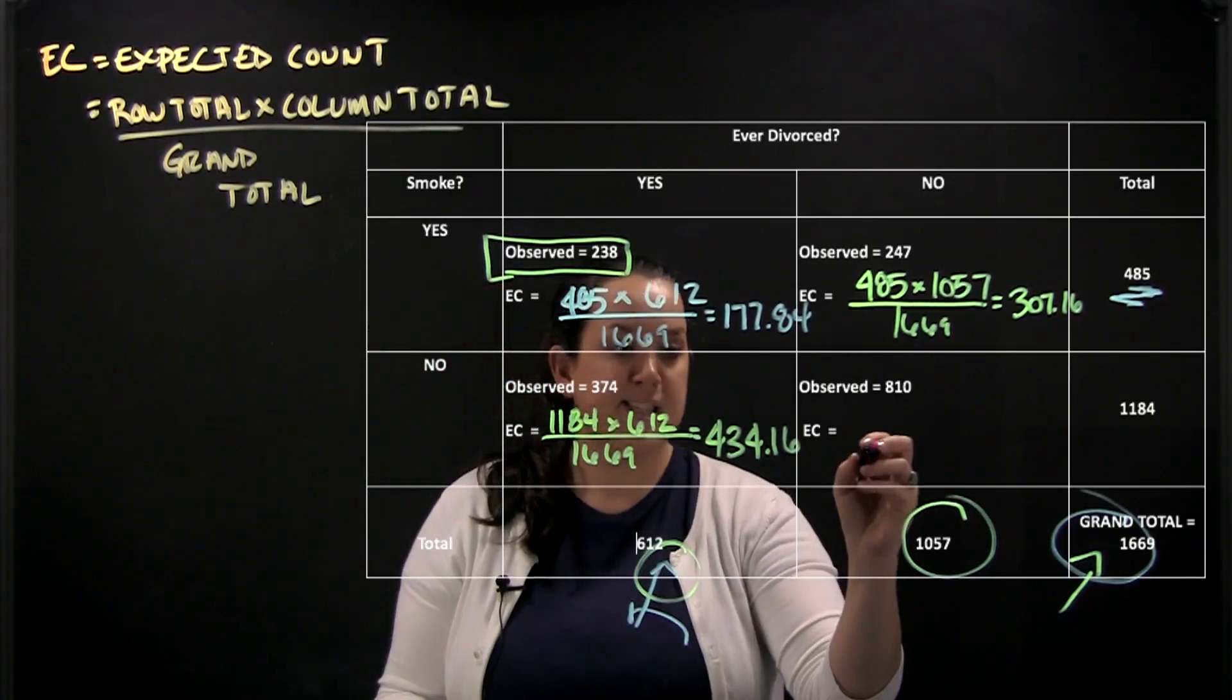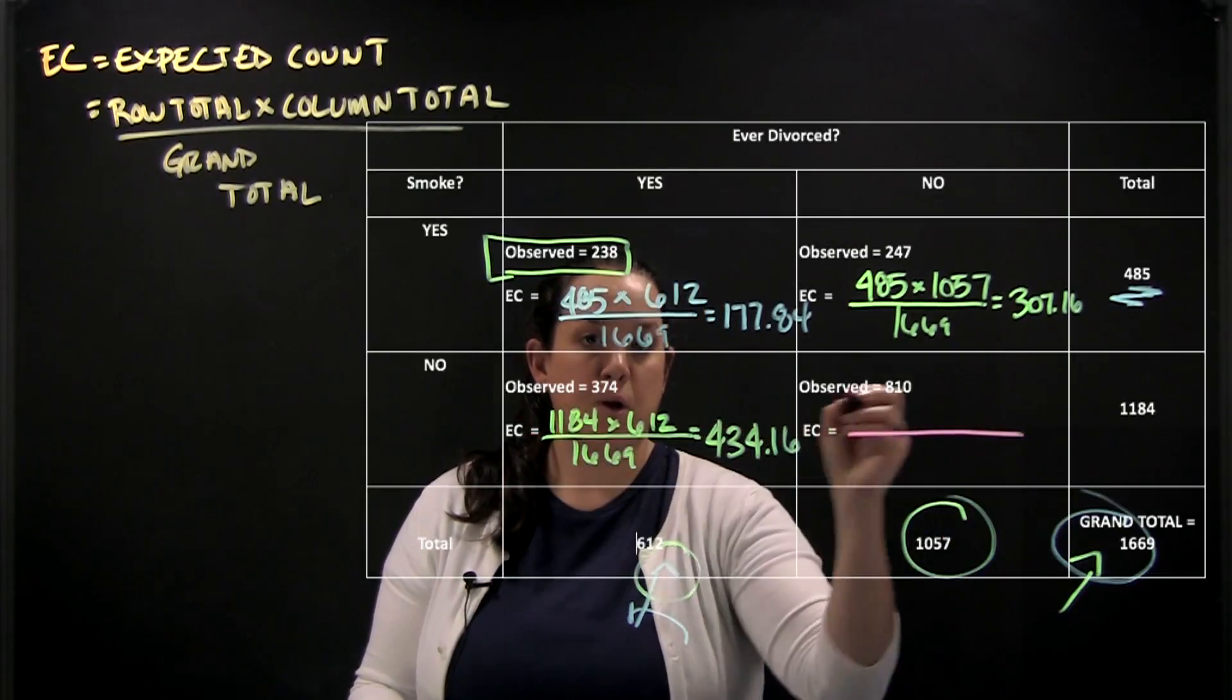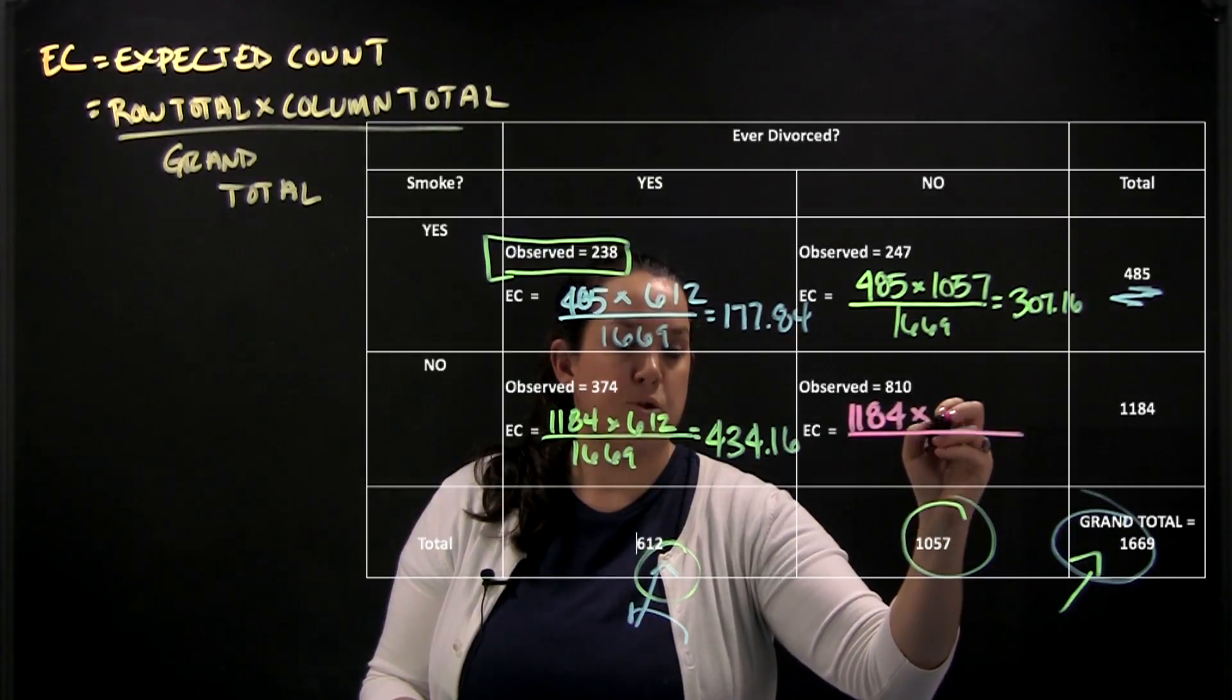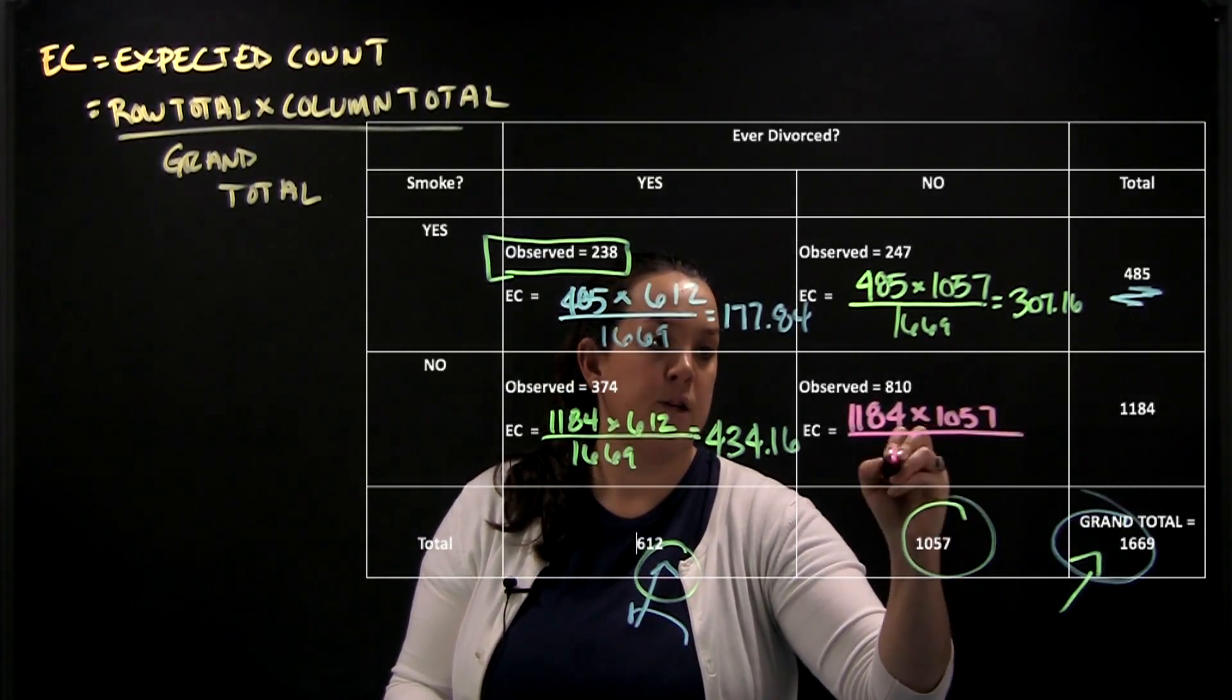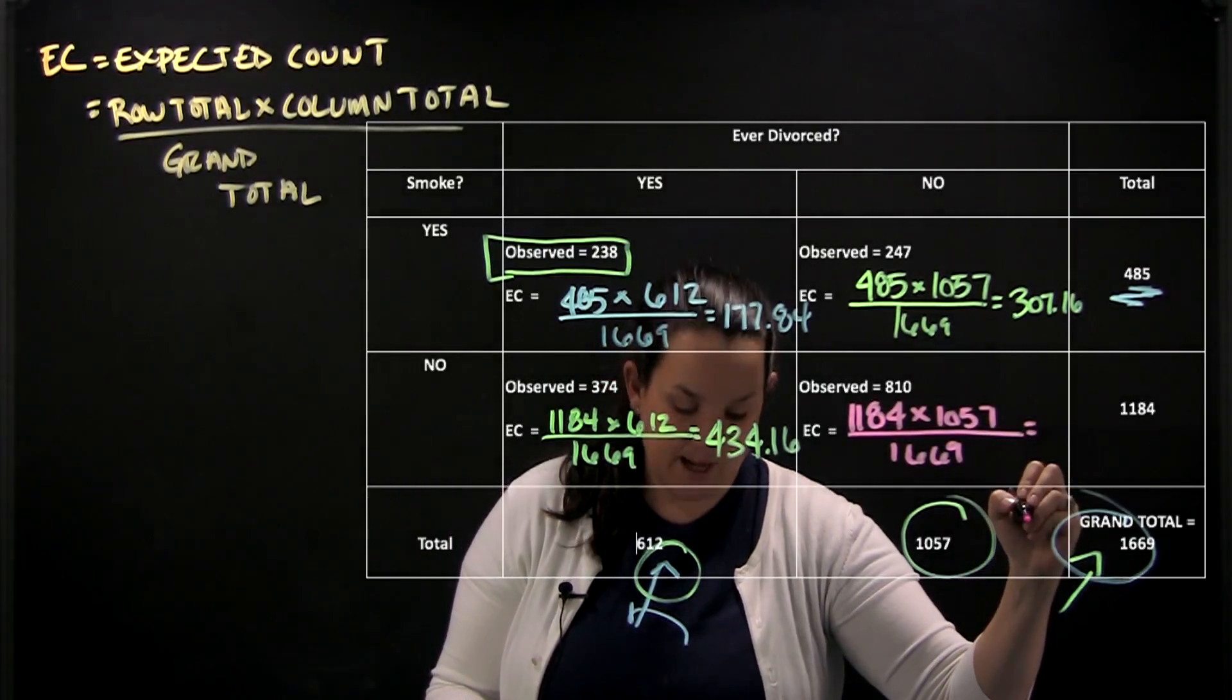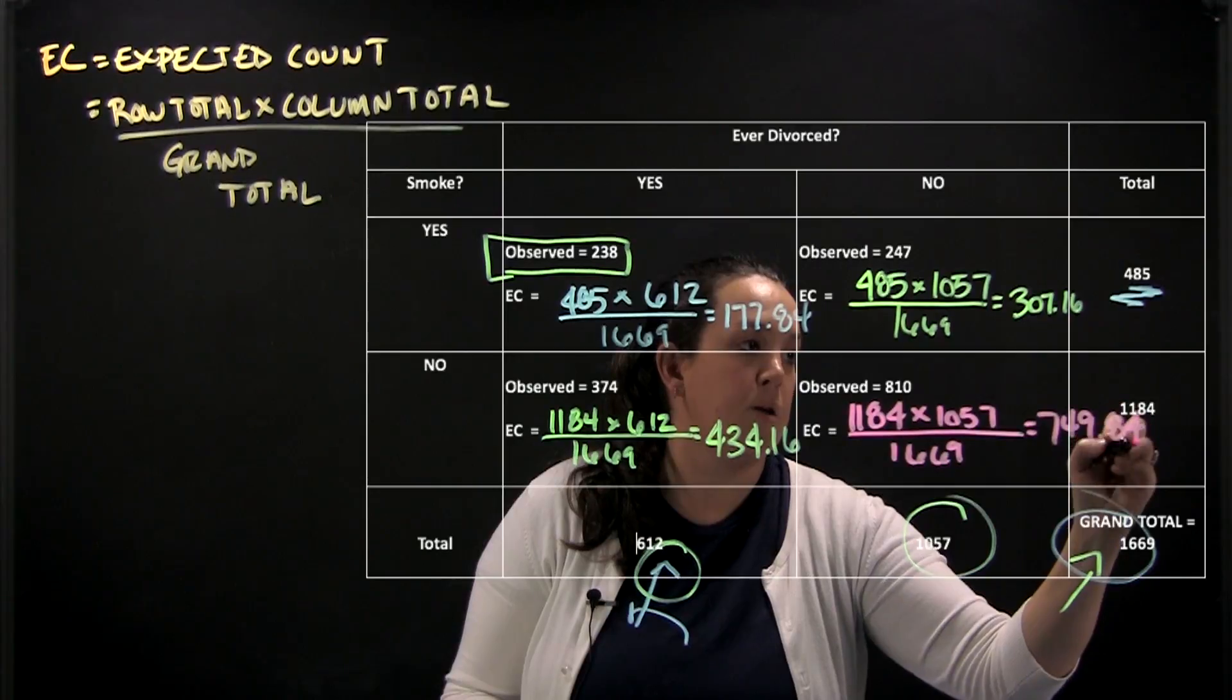The very last cell we have no smoking and no divorce. So I have a row total of 1184 times a column total of 1057 divided by the grand total 1669. And that gives me an expected count total of 749.84.